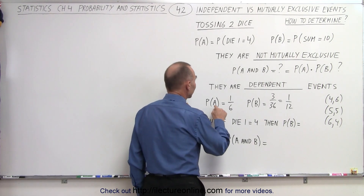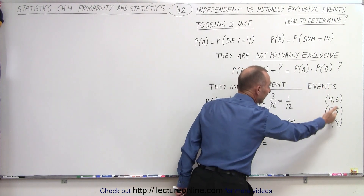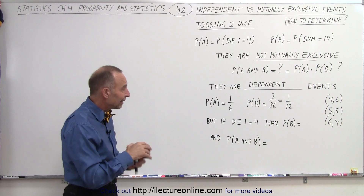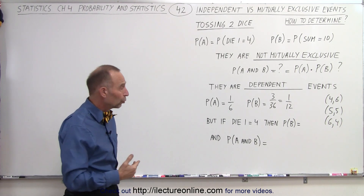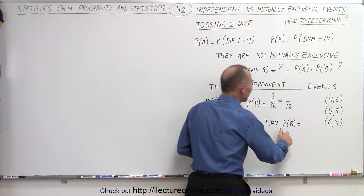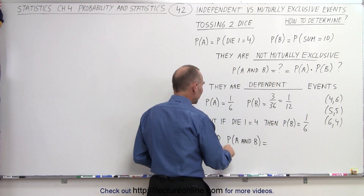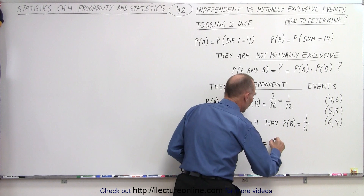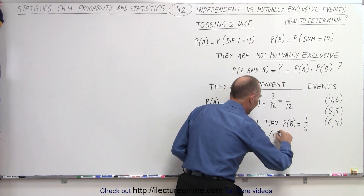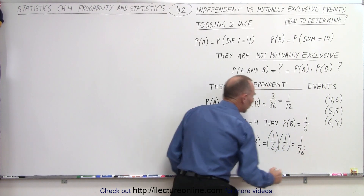But once we know that die 1 is either a 4, a 5, or a 6, we know there's then a 1 out of 6 chance that the sum of the two will be 10, and therefore the probability of B goes to 1/6. So if die 1 equals 4, then the probability of B goes to 1/6. Then the probability of A and B happening at the same time is 1/6 times 1/6, which equals 1 out of 36.